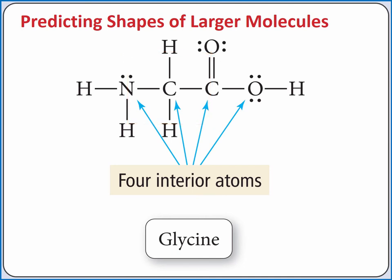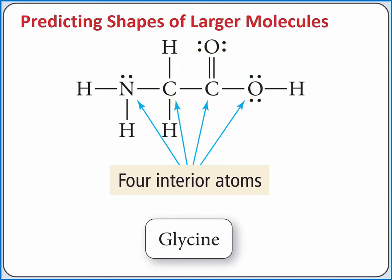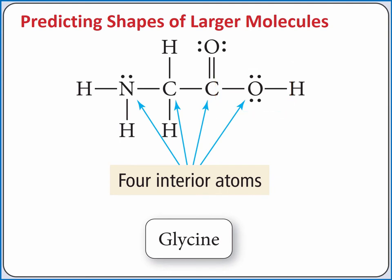For the rightmost carbon, we have three bonding groups and no lone pairs, so the molecular geometry is trigonal planar. And for the oxygen atom, we have two bonding groups and two lone pairs, so the molecular geometry is bent.